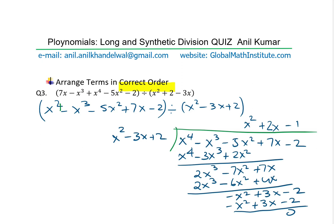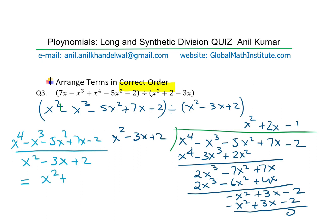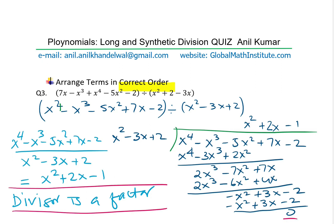Since the remainder is 0, x squared minus 3x plus 2 is a factor. The result is: x to the power of 4 minus x cubed minus 5x squared plus 7x minus 2 divided by x squared minus 3x plus 2 equals the quotient x squared plus 2x minus 1. Since the remainder was 0, the divisor is a factor of the dividend. Sometimes a question will ask whether it is a factor — this is how you determine it. You can use the quadratic formula if the divisor cannot be directly factored for the restrictions.